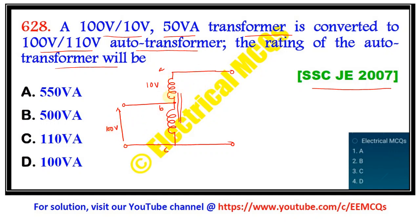For the winding connected between A and B, the current rating will be 50 divided by 10, which is equal to 5 ampere. The current rating of the other winding will be 50 divided by 100, which is equal to 0.5 ampere. When this transformer is in operation at full load, the input current will be 5.5 ampere.